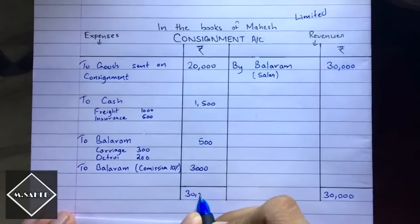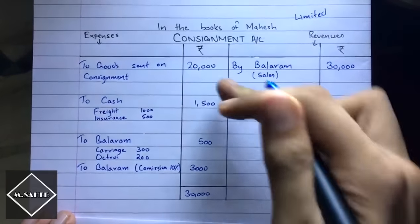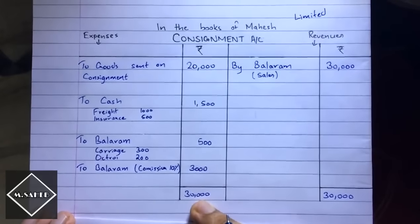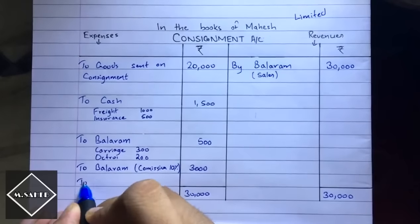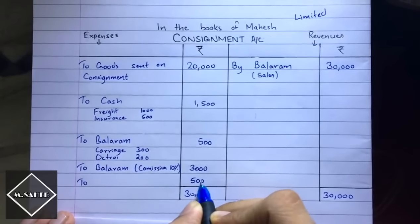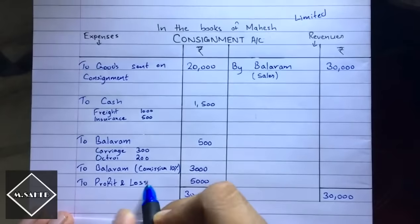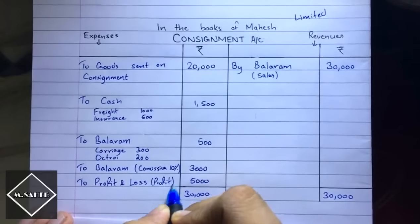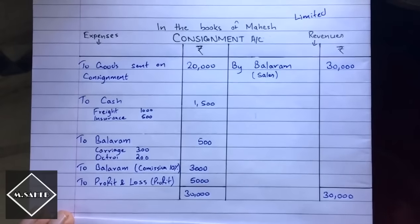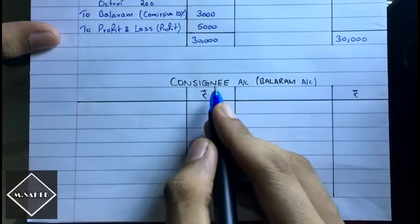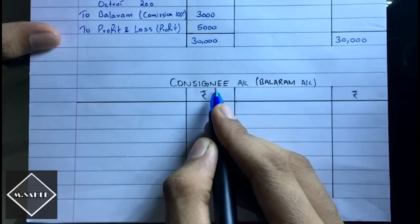We now balance the consignment account. Both sides total rupees 30,000, and after subtracting all debit entries the balancing figure is rupees 5,000. This profit is transferred to the profit and loss account.